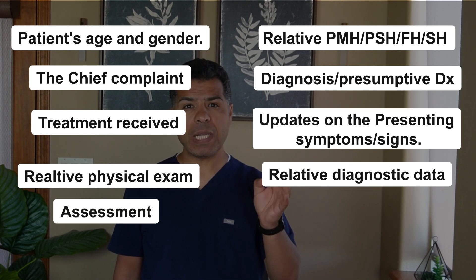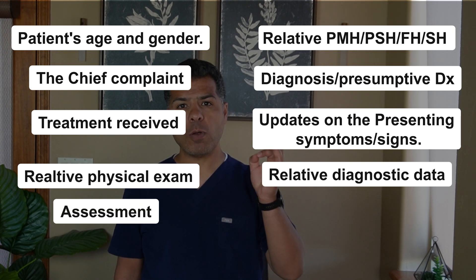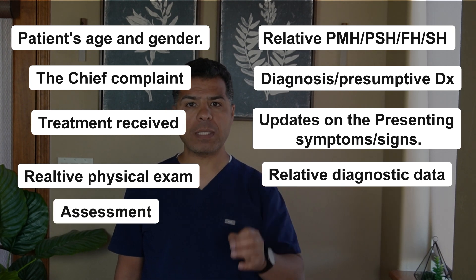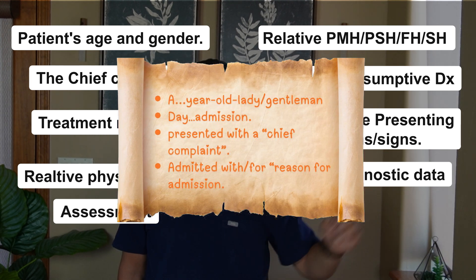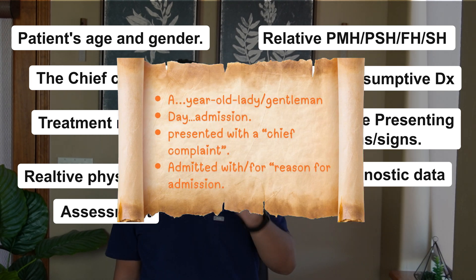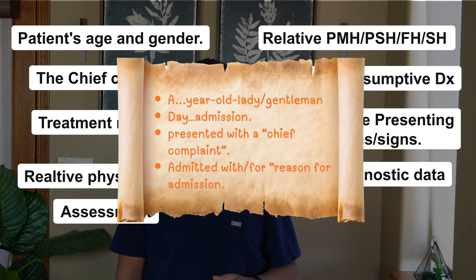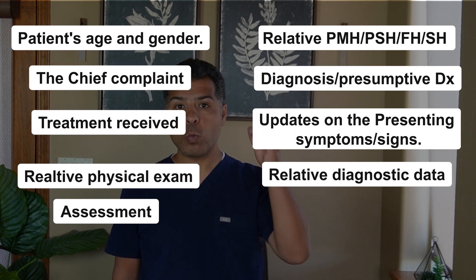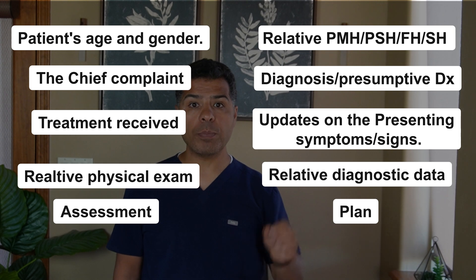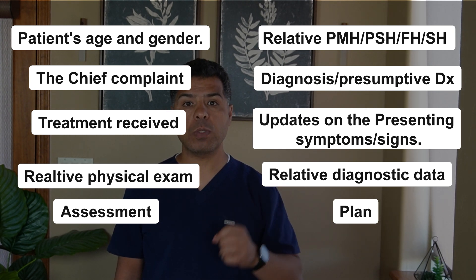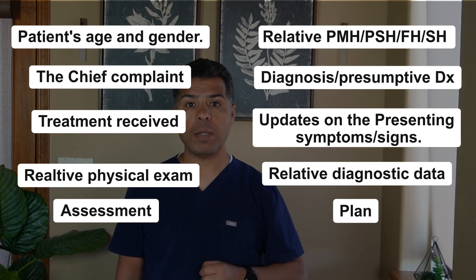Assessment — this is a one-liner that follows this format: a [age]-year-old lady or gentleman, day so-and-so of admission, presented with [chief complaint], and admitted with or for [reason for admission]. And we finish with the plan, which covers the plan of the active problem and discharge process.